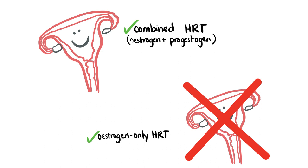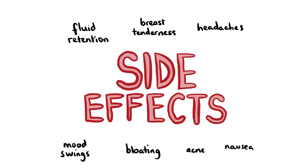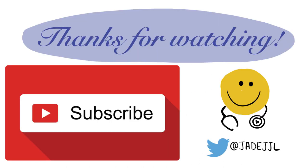Contraindications for HRT include current or past breast cancer, any oestrogen-sensitive cancer, undiagnosed vaginal bleeding, and untreated endometrial cancer. HRT comes with some side effects like fluid retention, breast tenderness, headaches, nausea and bloating due to the oestrogen component. There is also a risk of acne, mood swings and migraines if using combined HRT due to the progesterone component. Patients taking HRT are at an increased risk of venous thromboembolism and ischaemic stroke as oestrogen is prothrombotic. There is also an increased risk of breast, endometrial and ovarian cancer as well as gallbladder disease.